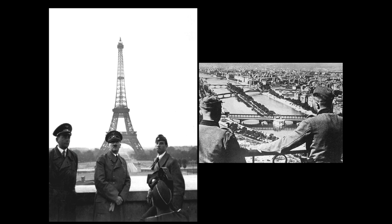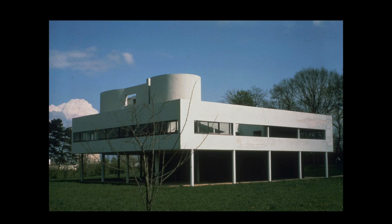One last building we're going to look at in Europe is the Villa Savoye by Le Corbusier. Earlier I mentioned Joseph Paxton had a background in horticulture — Le Corbusier was a watchmaker. During the 1920s and 30s, Europe was known for what's called the International Style, which has seven key components. The Villa Savoye has all seven of them.